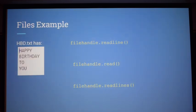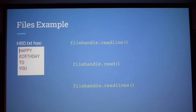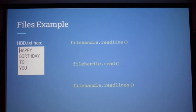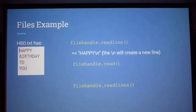Let's say you have a text file that says 'happy birthday to you' with each word on a new line. If you were to do file_handle.readline(), what would that output? It would return 'happy' — but it would also include the newline character. So it would return 'happy\n'. If you printed it in the console, it would give you 'happy' and then a blank line, because the document is: happy, newline, birthday, newline, to, newline.